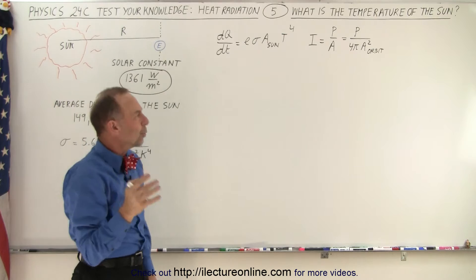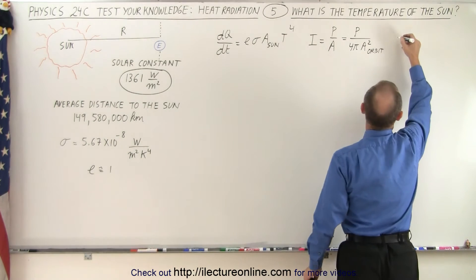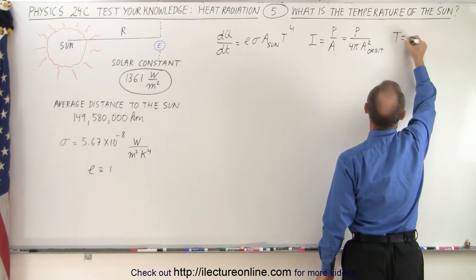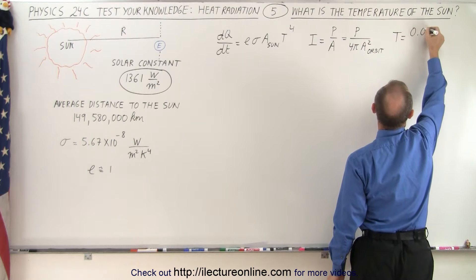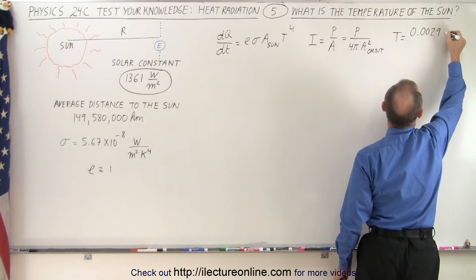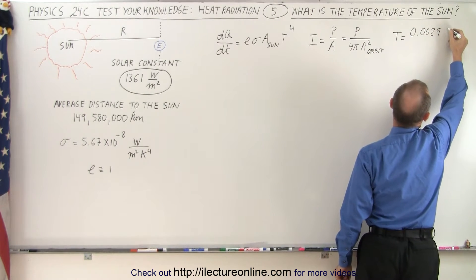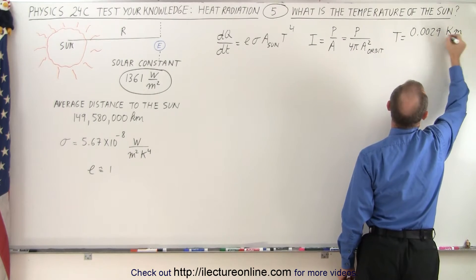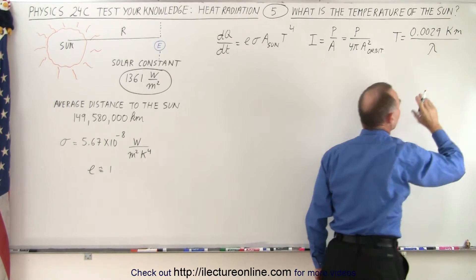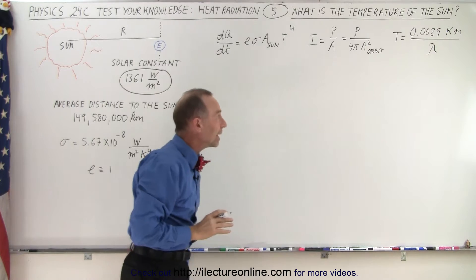We may need to know Wien's law just in case, and so that says that the temperature of an object is equal to 0.0029 (that would be Kelvin times meters) divided by the wavelength of the peak radiation of the blackbody radiation curve.